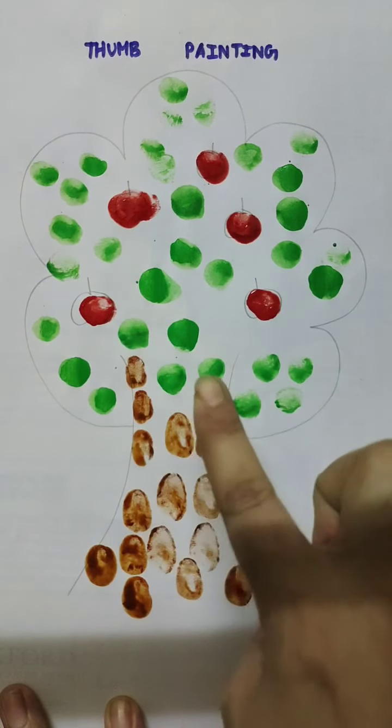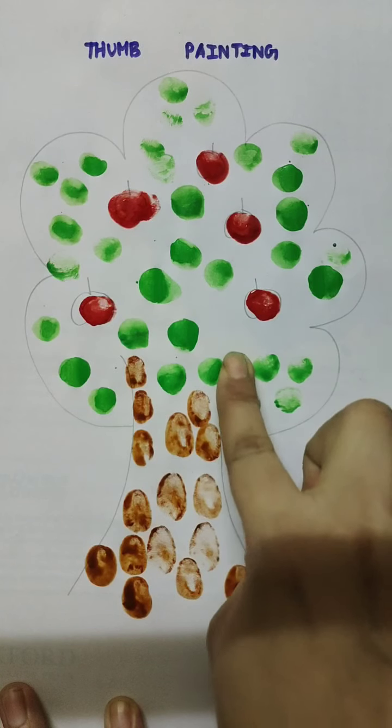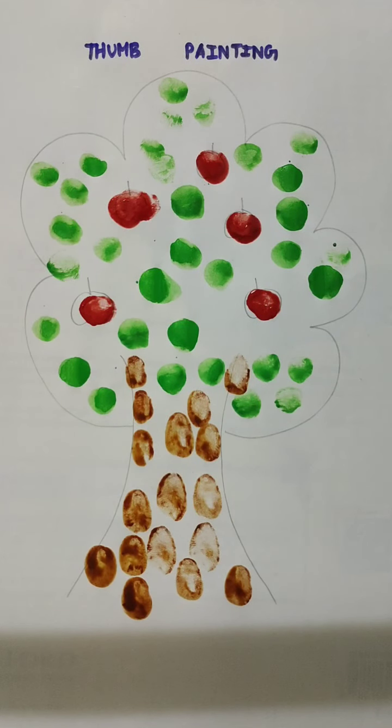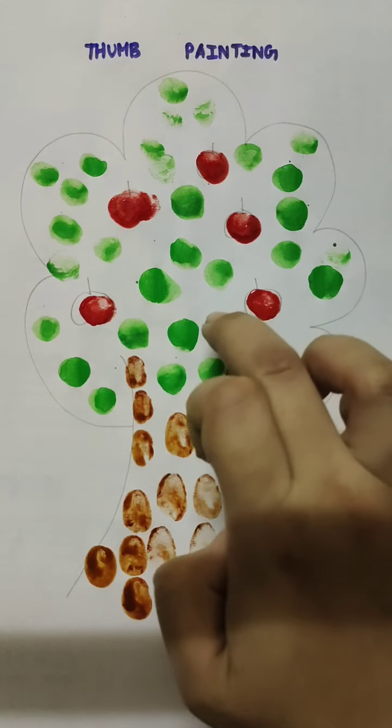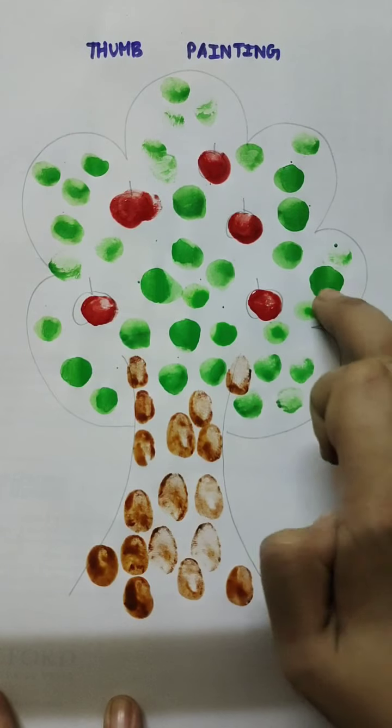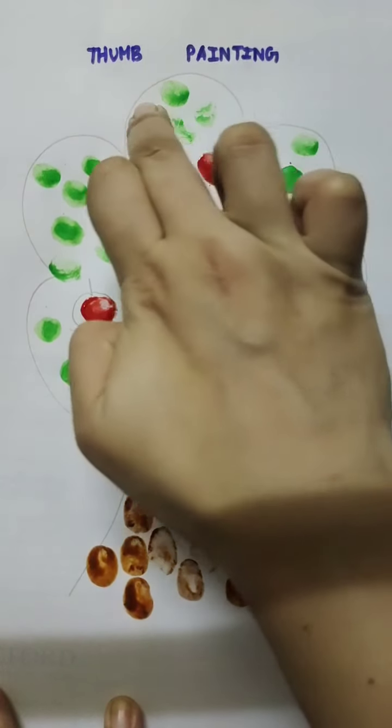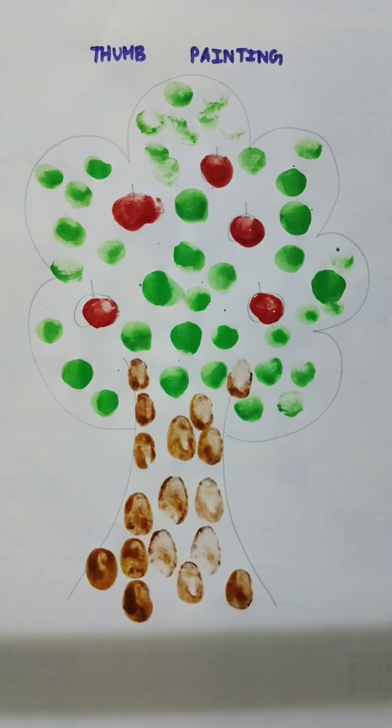It is a fun activity, children. You will enjoy doing it. Now you can fill in the places which are empty here. So this is my tree. The brown color stands for the tree trunk, the apples, and the green colored leaves in the tree. So likewise, you have to thumbprint or fingerprint your tree.